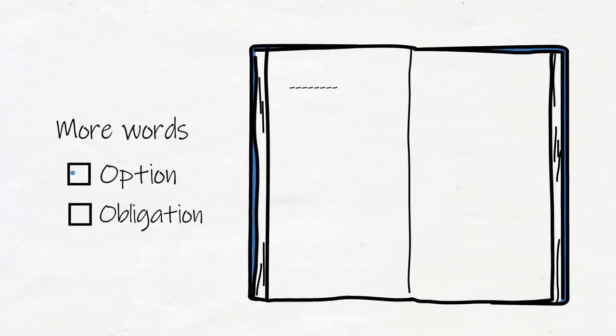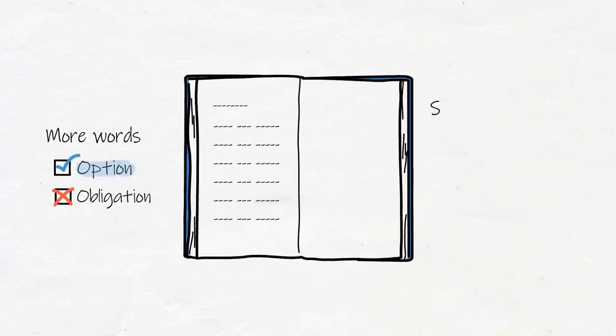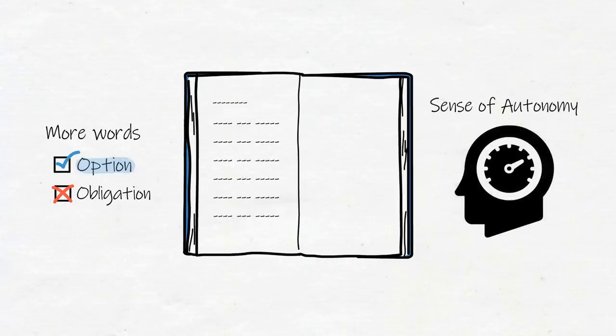But if I'm genuinely satisfied after writing one word in my journal, and make more words an option, not an obligation, I'm more likely to stick with my habit, and I'm more likely to produce more words. By giving myself the choice to write more, I activate a sense of autonomy, which is a powerful intrinsic motivator.